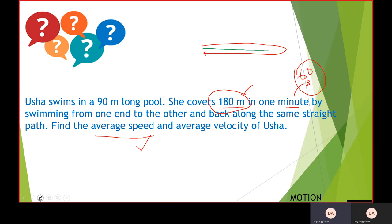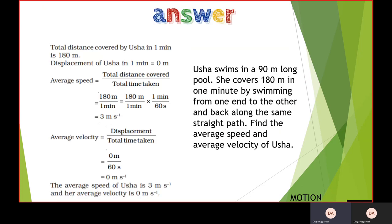Now for average velocity, we have the displacement upon time. Since my initial and the final position are same, so the displacement is zero. So zero divided by 60 seconds will give me zero meter per second. And that is my average velocity. So my average speed is 3 meter per second. We have converted the minutes into seconds. Now for average velocity, I have my displacement as zero meter and total time taken as 60 seconds. So I'll get my answer as zero meter per second.